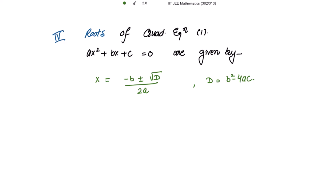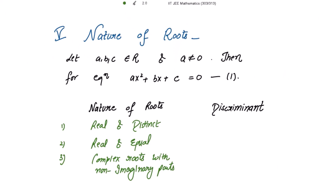Let's study the nature of the roots. Let a, b, c belong to the set of real numbers and a is non-zero, then for the quadratic equation ax² + bx + c = 0, if the discriminant D is strictly positive, then the roots are real and distinct. This is an if-and-only-if condition: real and distinct roots imply D > 0, and D > 0 implies real and distinct roots.